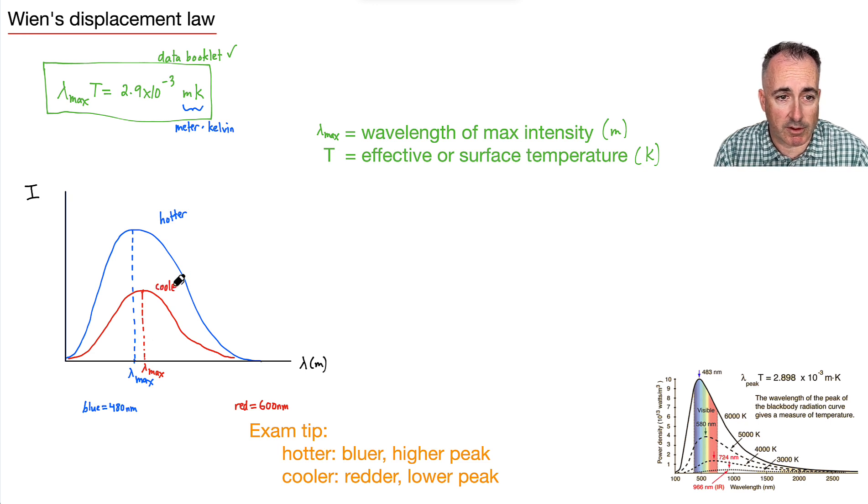And so what we get from this right here, we get that this exam tip is, hey, by the way, it helps to know that blue is around 480 nanometers, red is around 600 or so. But what's really important is this, that hotter things are bluer.